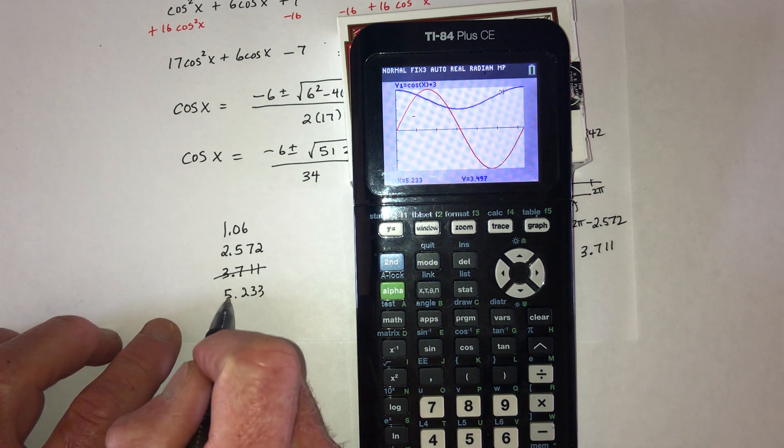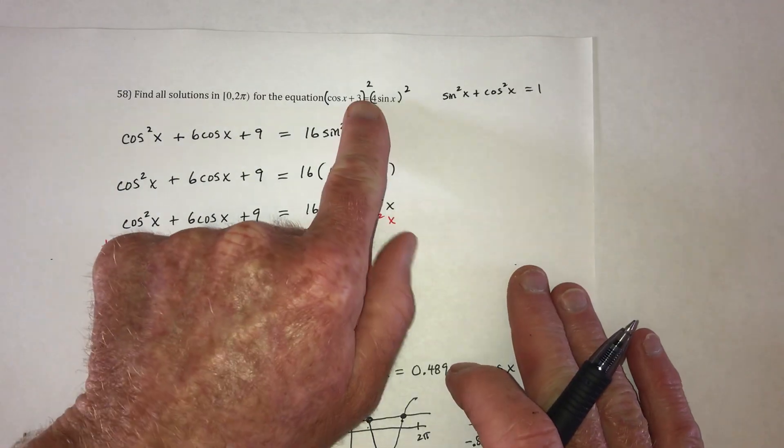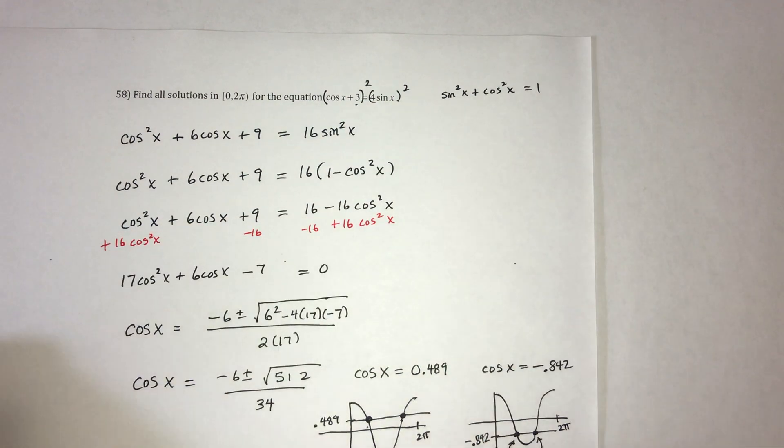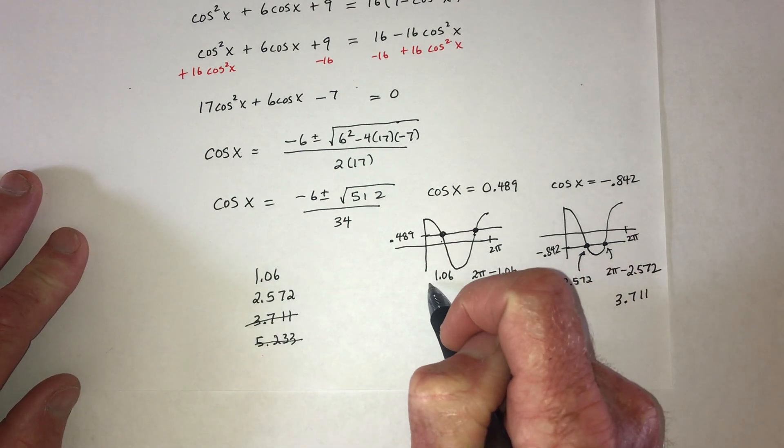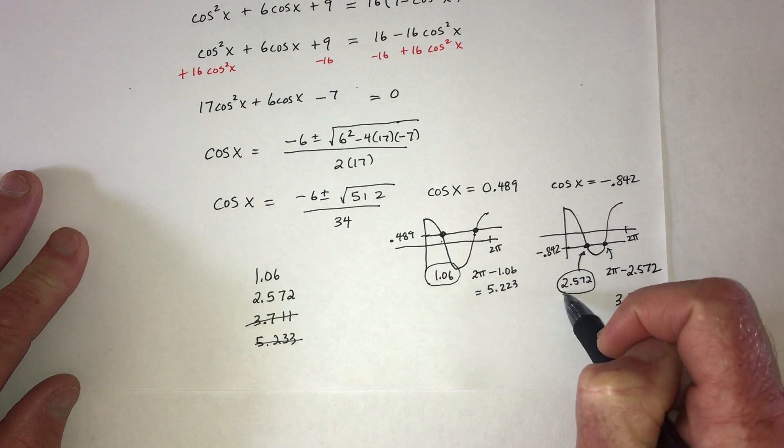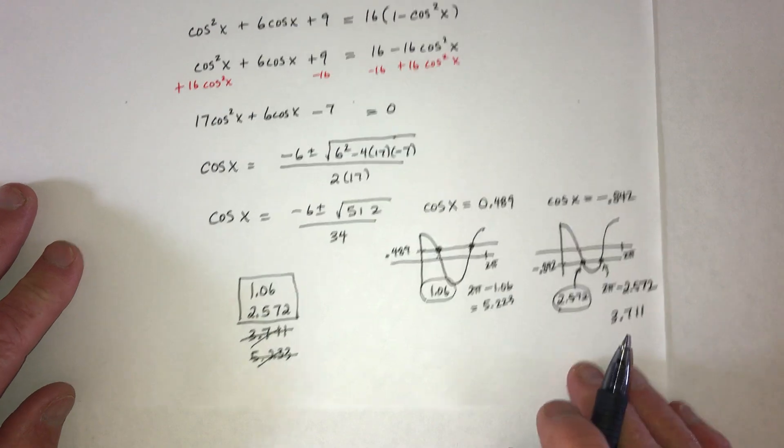The reason we got extra solutions is because we squared both sides. When you square both sides, that can give you extra solutions which aren't actually a part of the final answer. So, from this one, it was just the first answer on this one and the first answer on this one. So, only these two are keepers. The other, throw them back in the ocean.